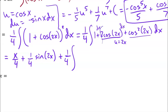So then we have one-fourth, and then with this cosine squared of 2x term, I'm going to do another one-half, so let's make this one-eighth, and then 1 plus cosine of 4x, dx.